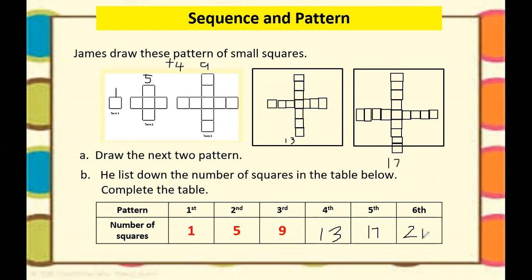So this is how to complete shape patterns. The number of squares in the first pattern is one, second pattern is five, third pattern is nine, fourth pattern is 13, fifth pattern is 17, and sixth pattern is 21 squares. If you subtract five minus one, it is four, so it is increasing. Therefore we need to add four each time. I hope you have understood this lesson, Year 6.